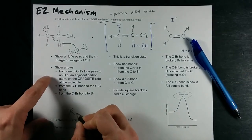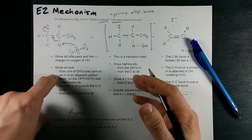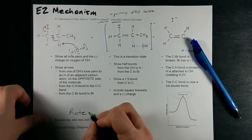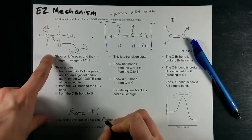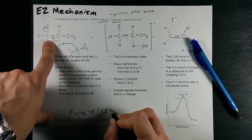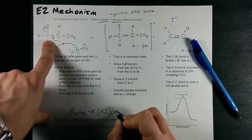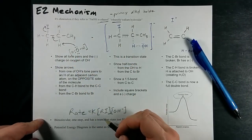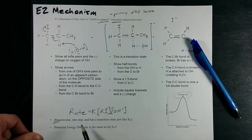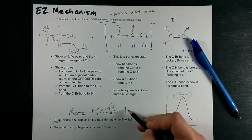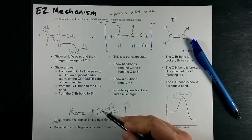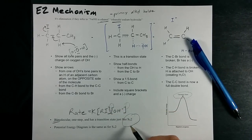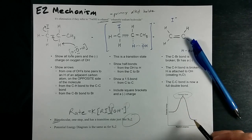Last thing I want to point out is that the slowest step, or rather only step of this mechanism, has RI playing a role, the alkyl halide, and it also has OH- playing a role. It's a bimolecular collision. Oh, bimolecular. And the overall order of one plus one, which makes two, is where we get the two in E2, even though it's only a one-step mechanism.